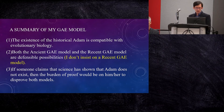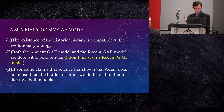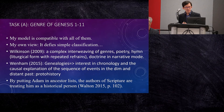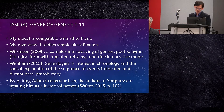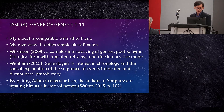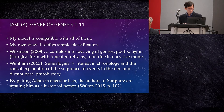If somebody claims that science has shown that Adam does not exist, the burden of proof will be on him or her to disprove both the ancient and the recent GAE model. Let me say a bit more about Task A — the task of interpreting the scripture. How do I understand the genre of Genesis 1 to 11? Different scholars have different views about this, but my model is compatible with all of them. My own view is that the genre defies simple classification.